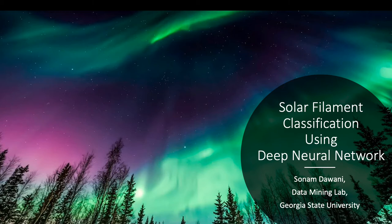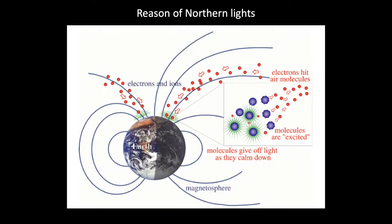In my slides background, you can see beautiful northern lights. But what is the cause of the northern lights? As shown in the image, it is caused when charged particles from the sun strike air molecules in Earth's atmosphere. They cause those molecule atoms to become excited. The molecules give off light as they calm down. One of the sources of these charged particles from the sun is the solar filament eruption.